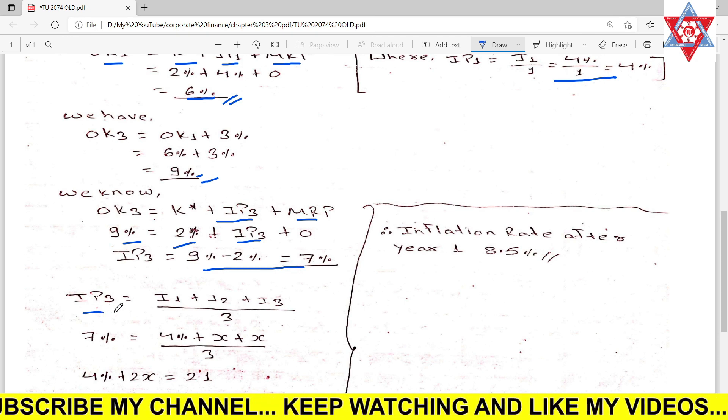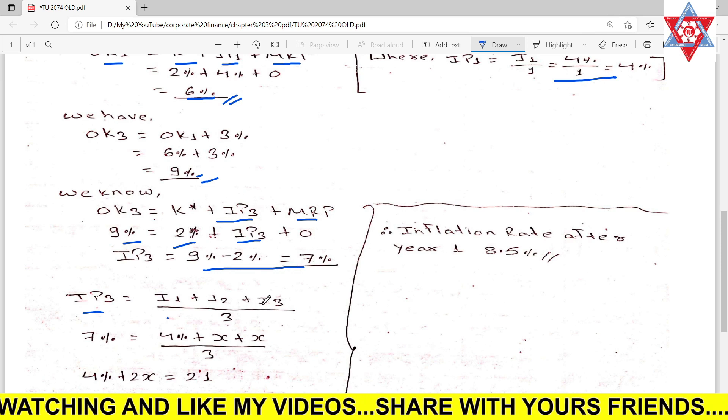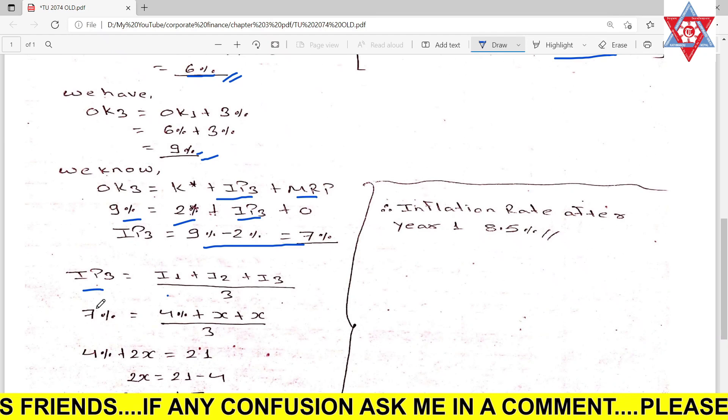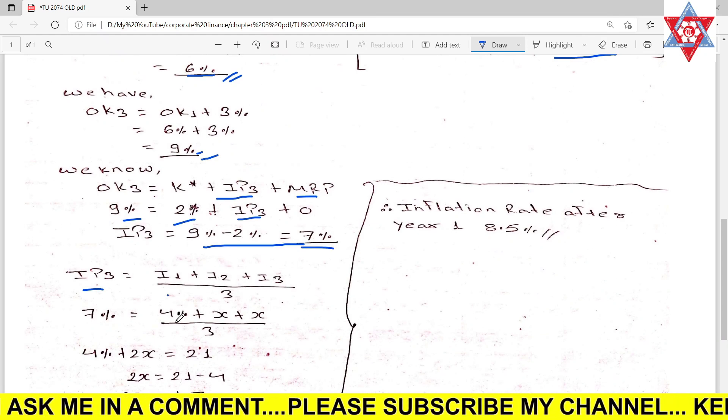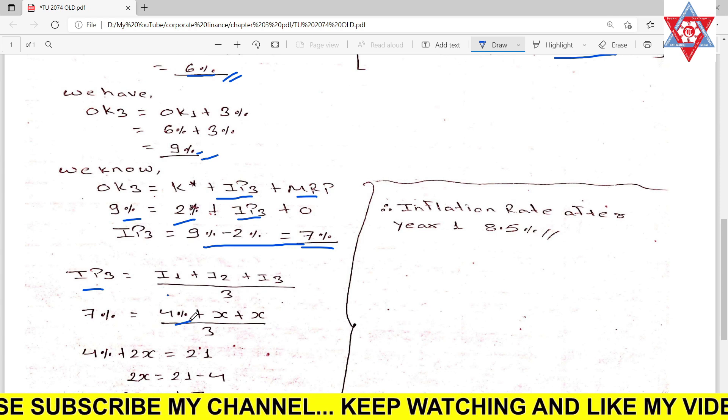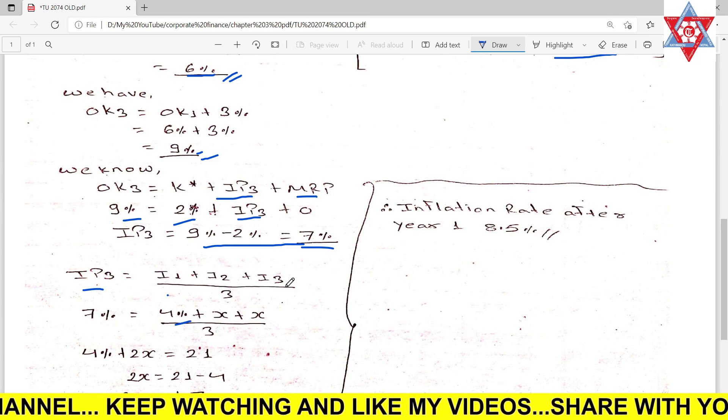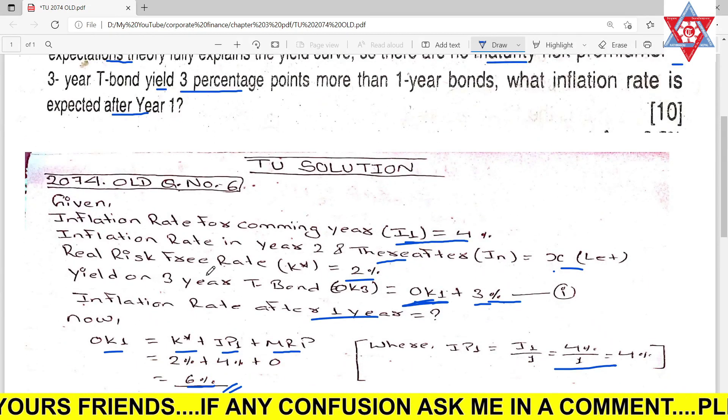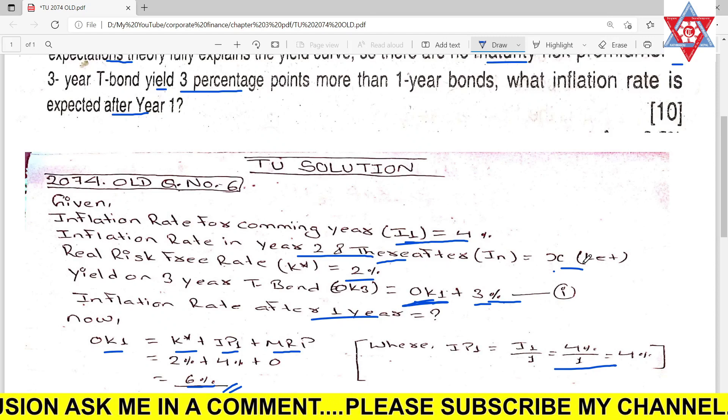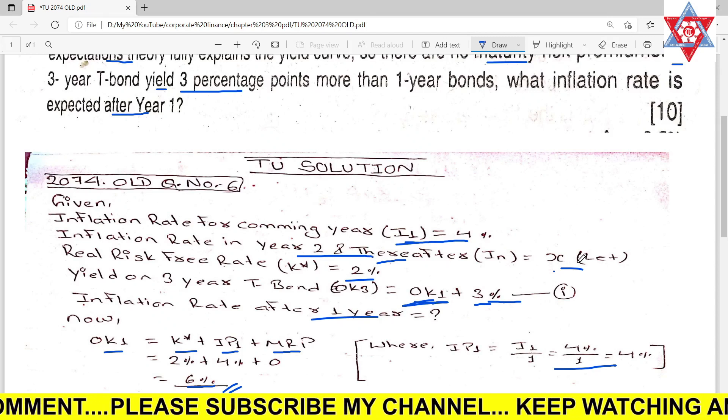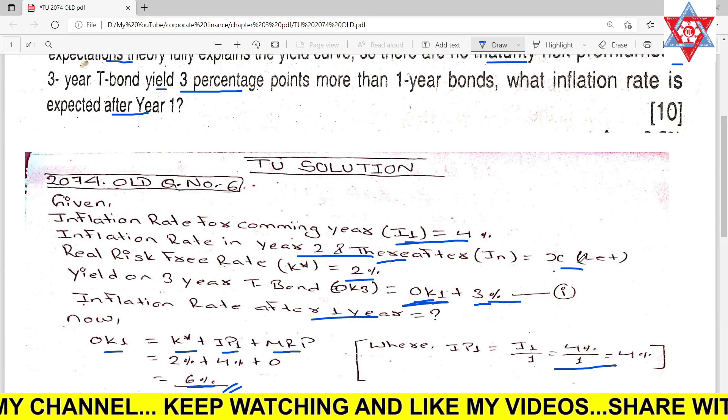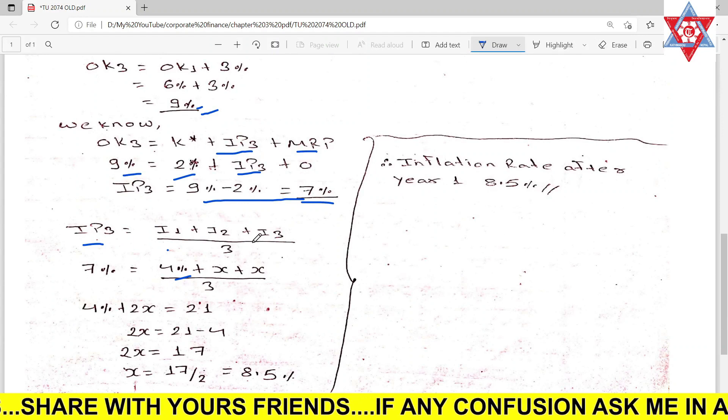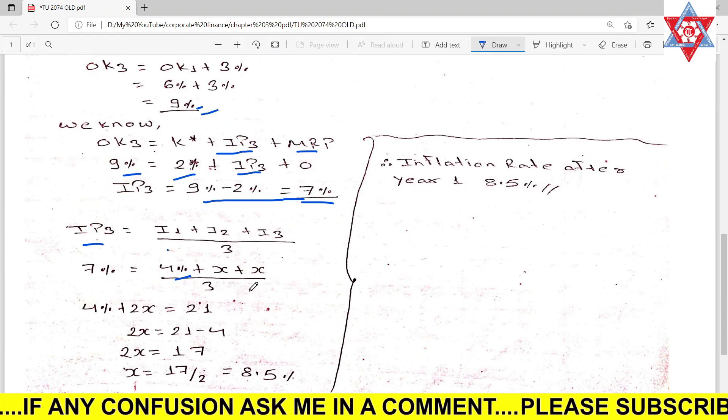Inflation premium for year three is I₁ plus I₂ plus I₃ divided by three. IP₃ is seven percent. I₁ is four percent. I₂ and I₃ are X, the constant inflation rate.